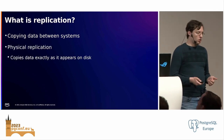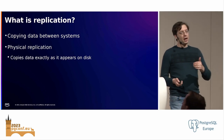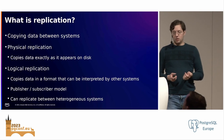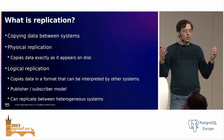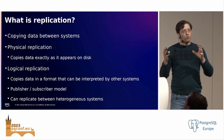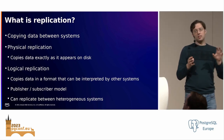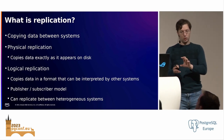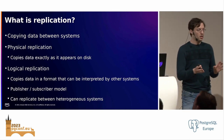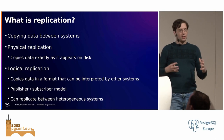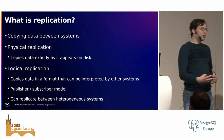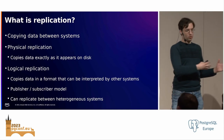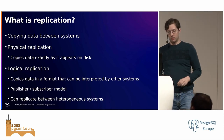There's physical replication, which is effectively a byte-by-byte copying of your data from one system to another. And there's logical replication, which is where you copy your data in a format that could be understood by other systems. Physical replication is very powerful and very useful, but it's very specific to that system, whereas logical replication gives you a lot of flexibility. You can copy data from Postgres to another system that's not even Postgres in real time.